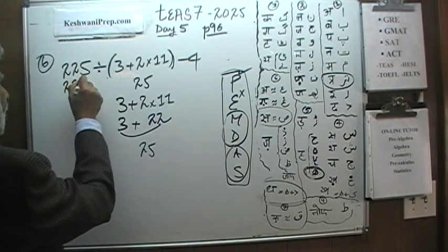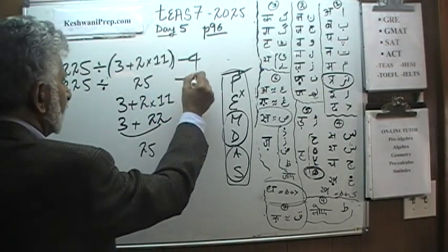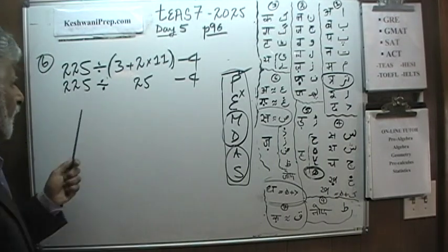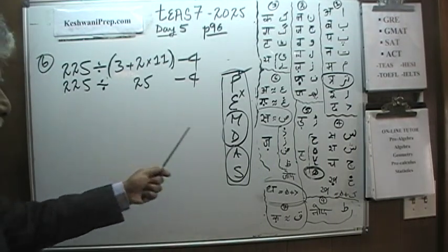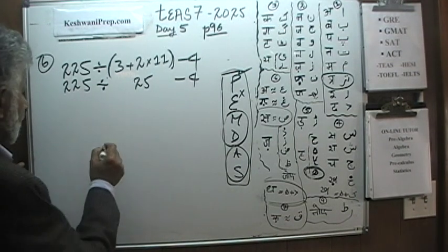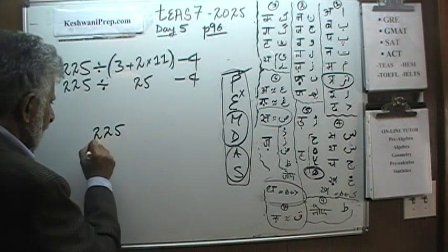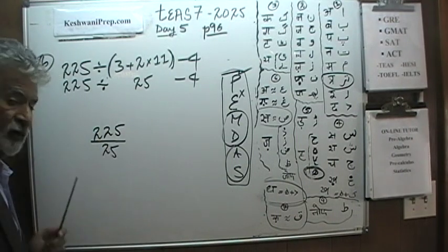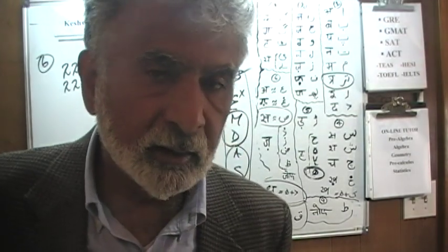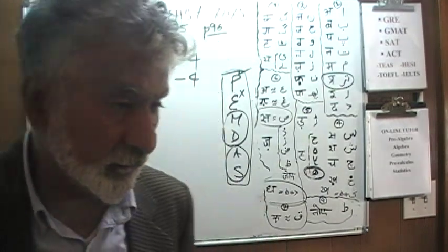So our expression is now 225 divided by 25 minus 4. We have division and subtraction; division comes first. We need to figure out 225 divided by 25.